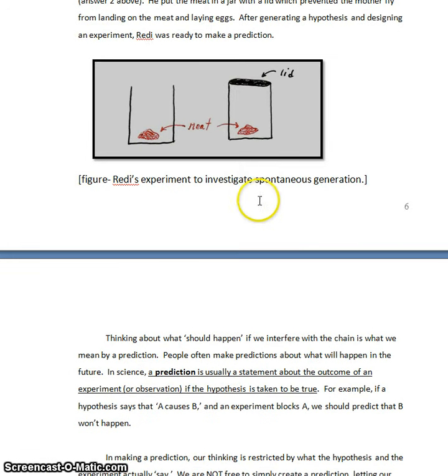To wrap this up then, let's go ahead and see how our thinking format can be applied to Redi's simple experiment with just the two conditions. So remember, he had an open jar and a jar with a lid. And he was testing the idea that fly access to the meat was causing spontaneous generation.